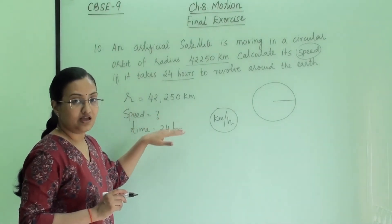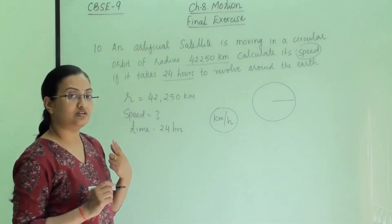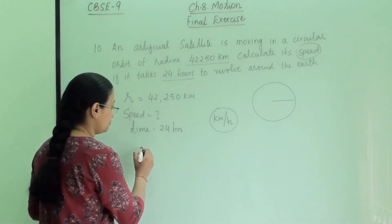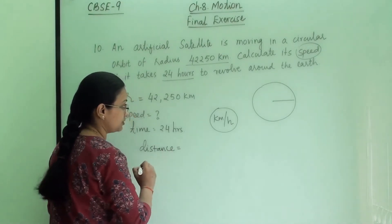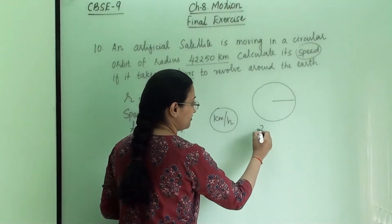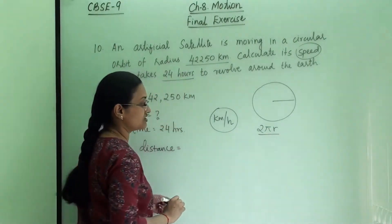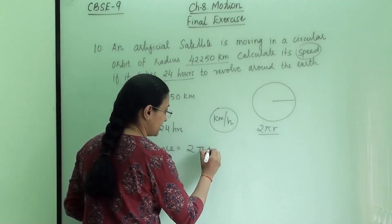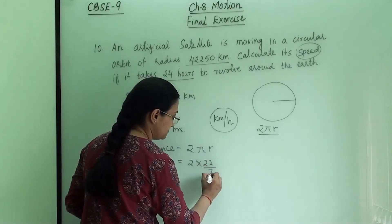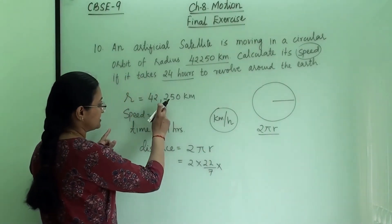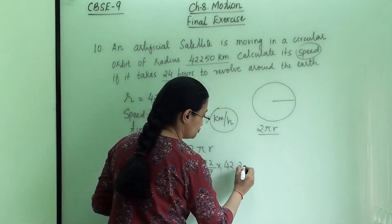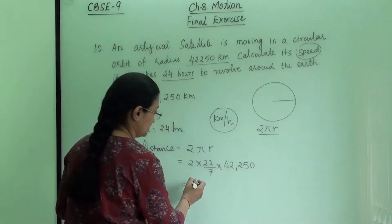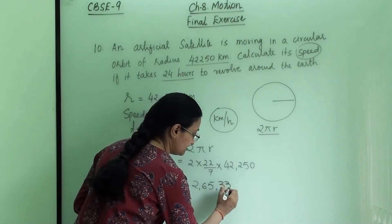First we need to find the distance. Because the path is circular, we find the distance using the circumference of the circle, which is 2πr. So distance = 2 × (22/7) × 42,250. When we solve this, we get 265,330 km.